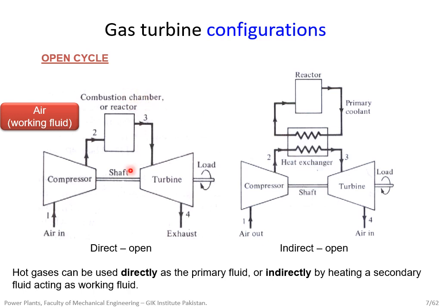We also discussed direct open versus indirect open configurations. Open means open to the atmosphere for both. The difference is the heating mechanism: direct means air enters the combustion chamber where heat is added directly, and hot gases expand in the turbine directly. Indirect means heat is added via a heat exchanger, which can extract heat from another source — such as a nuclear reactor, another combustion chamber, or a solar collector.